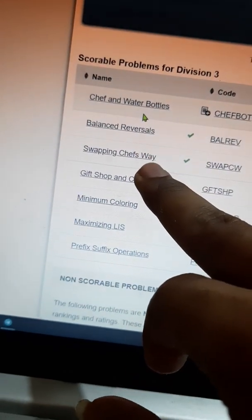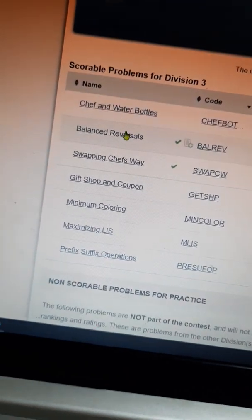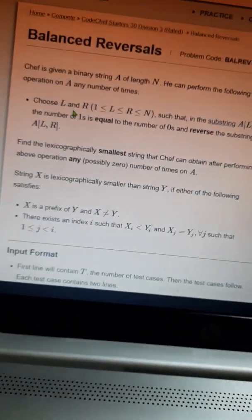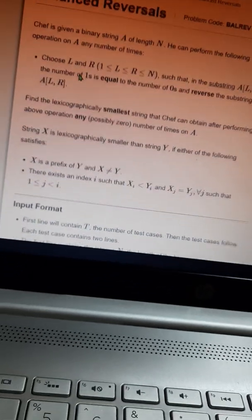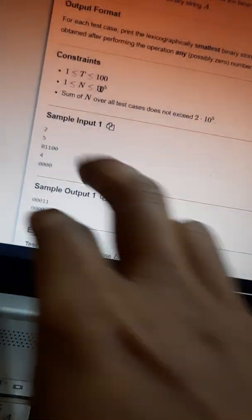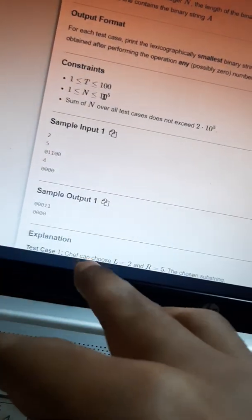Balanced Reversals and Swapping Chips, we are done. Balanced Reversals: we need to choose a substring. The string consists of 0s and 1s and we need to choose a substring and reverse it.